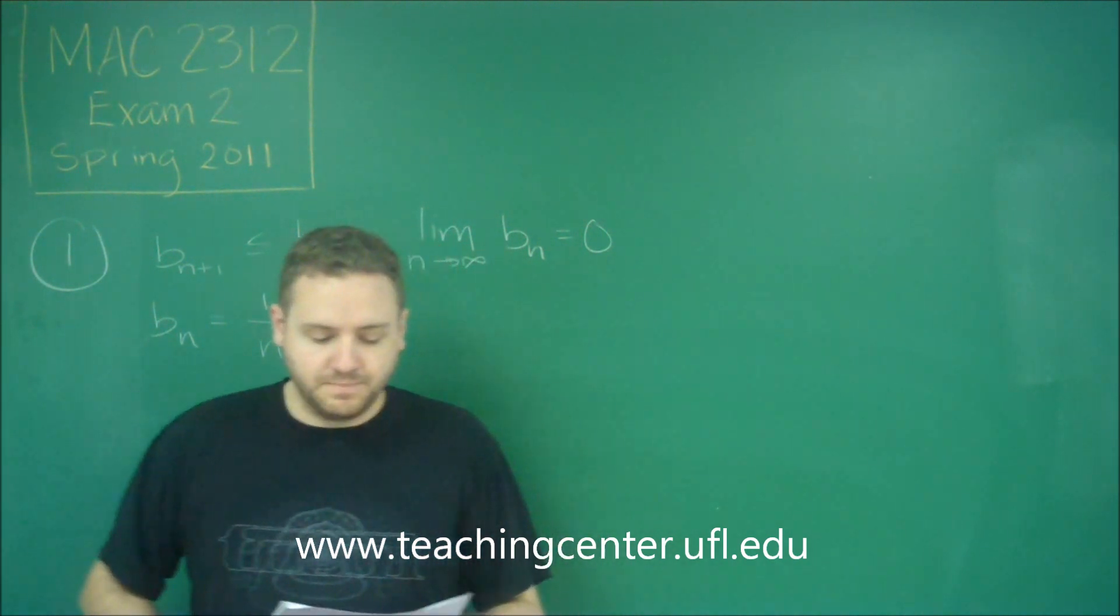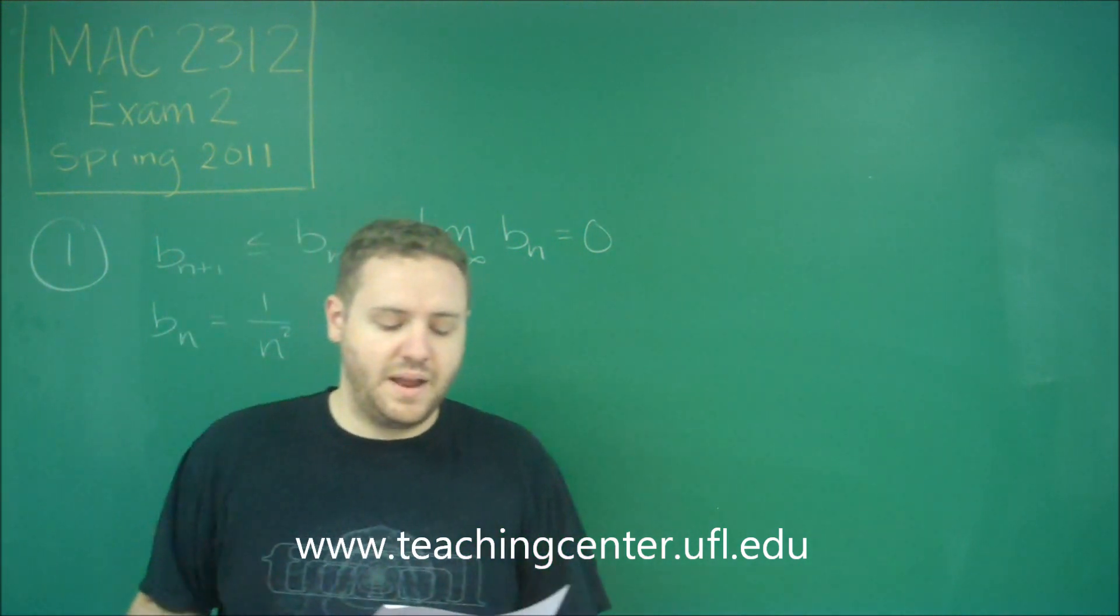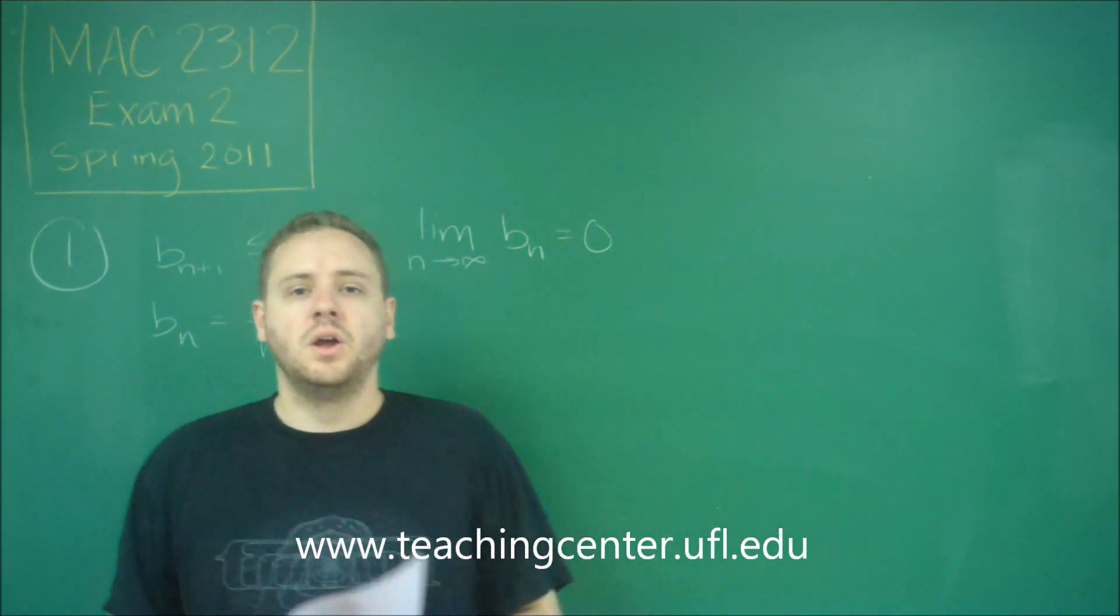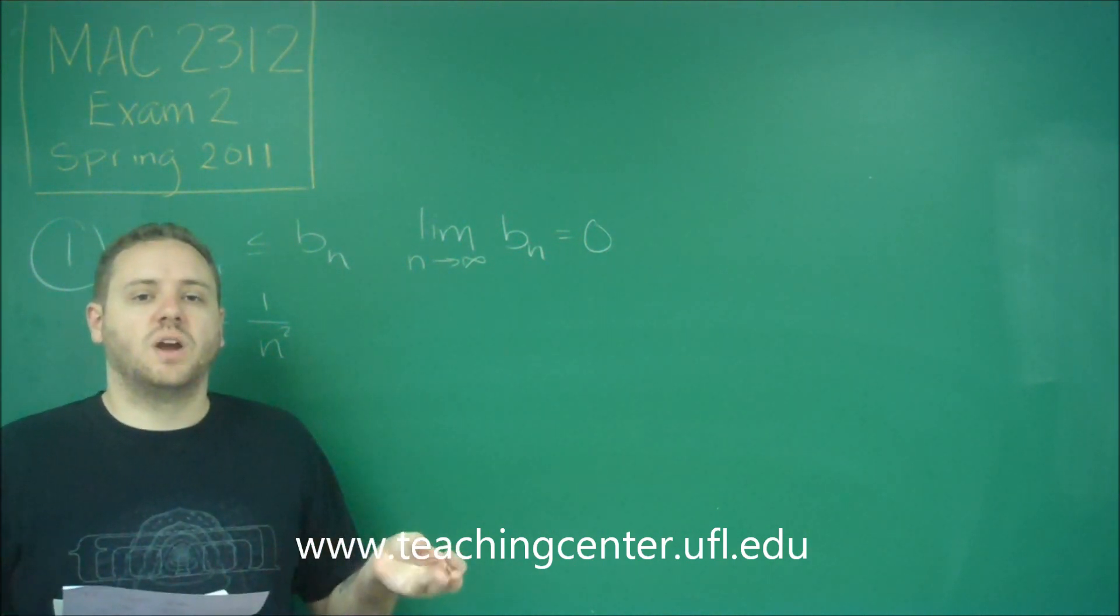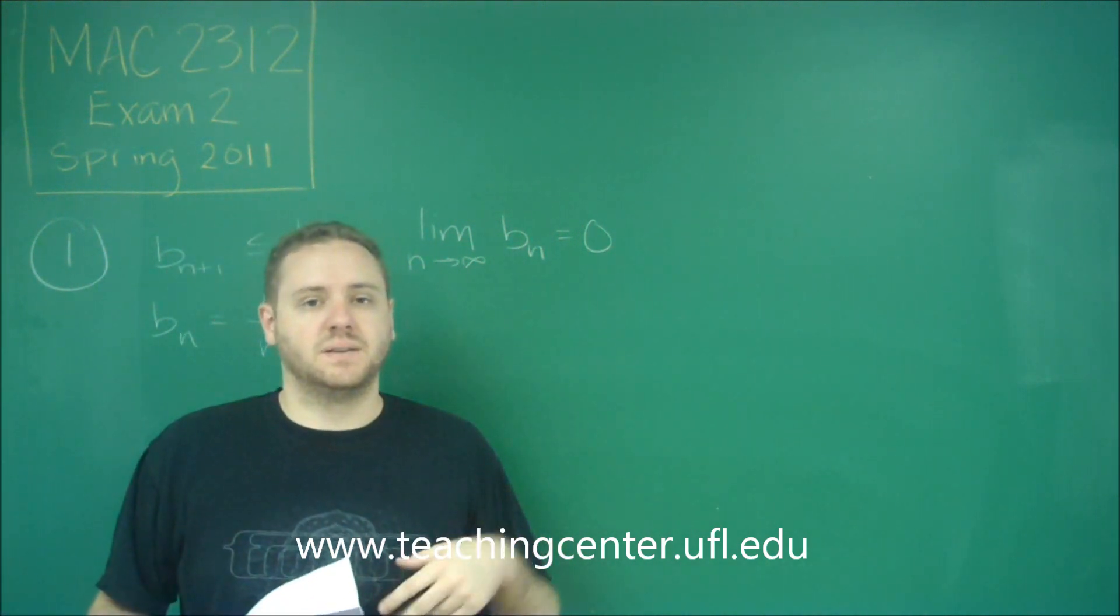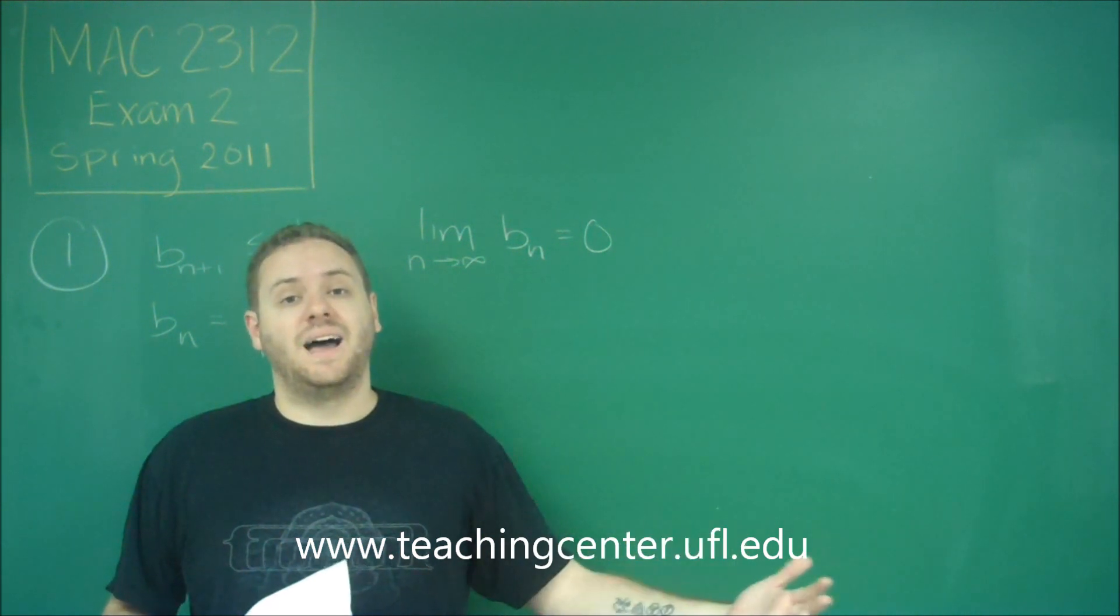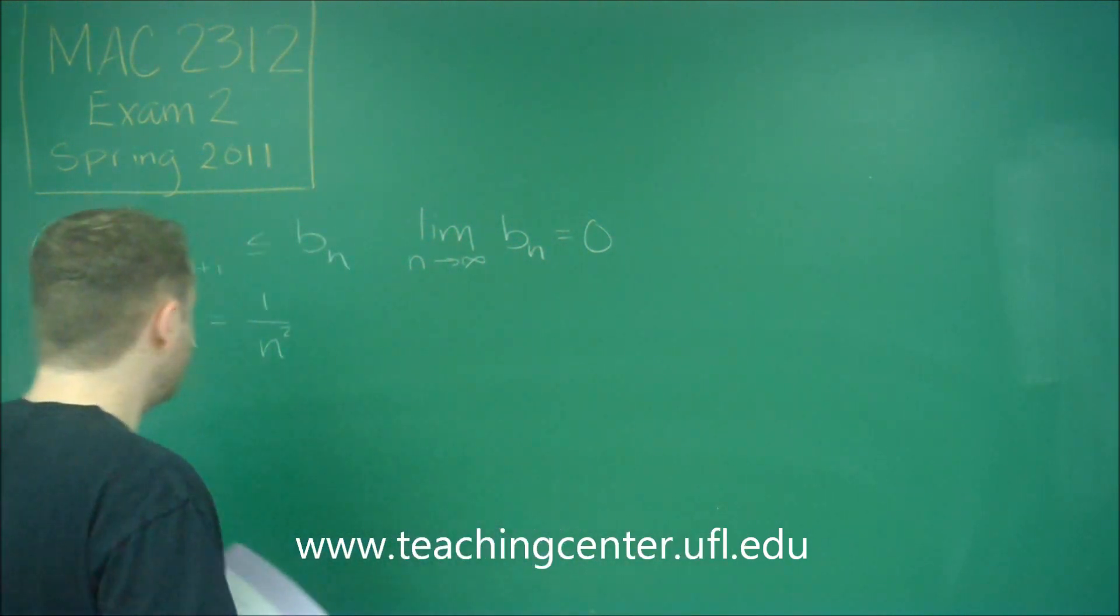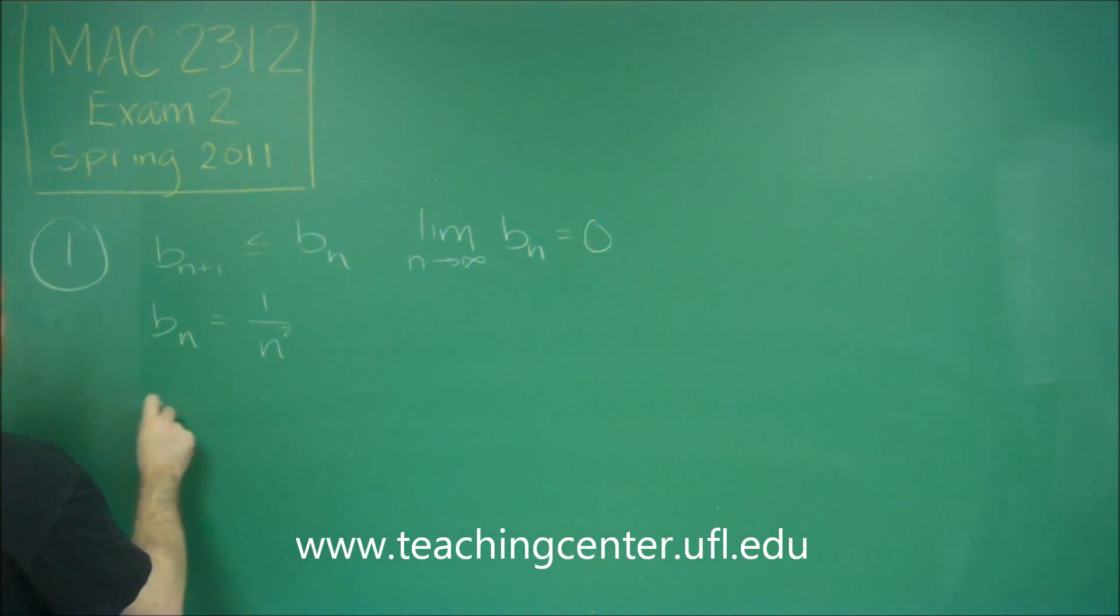So we can use our alternating series to check what this error is going to be. When you have a restriction on your error—we need the error to be less than 0.02—what you want to do is just write out the first few terms of the series and try to find which term has a value that's less than that. Because then every subsequent term will have a value even less than that and therefore won't contribute. When you write out the series though, you definitely want to write it in alternating form.